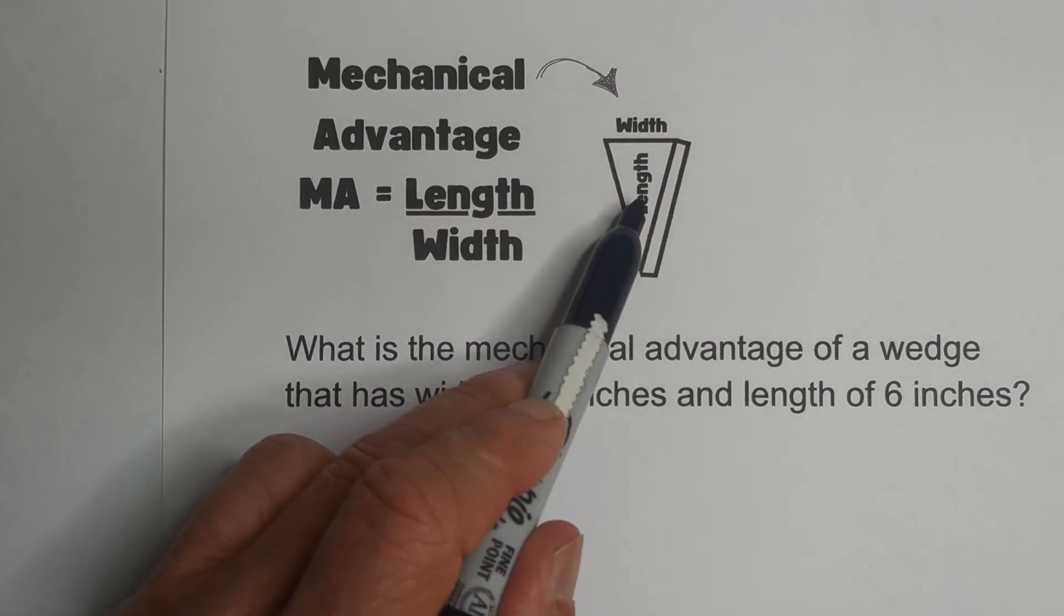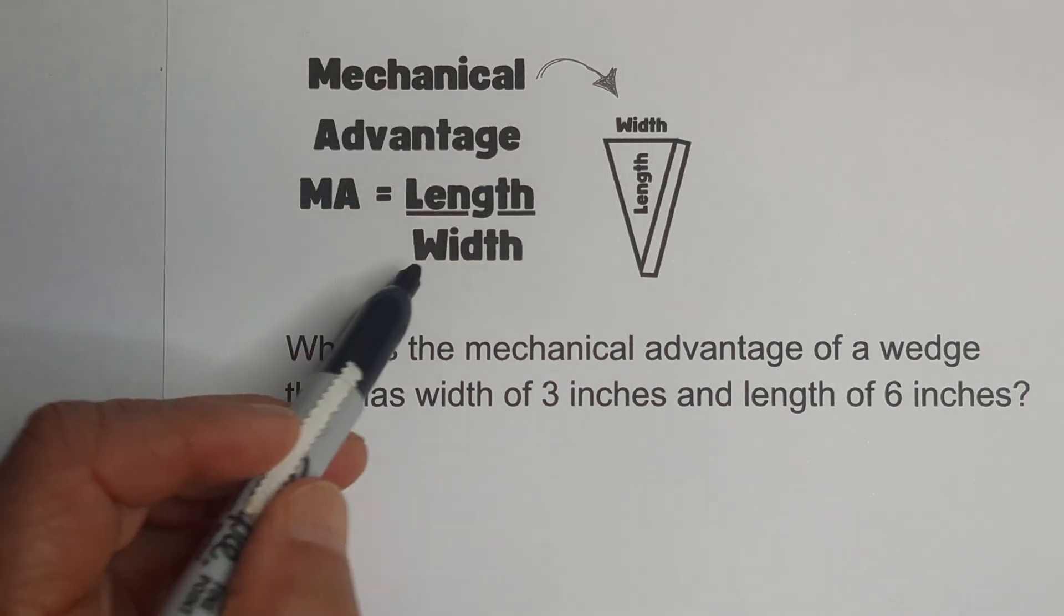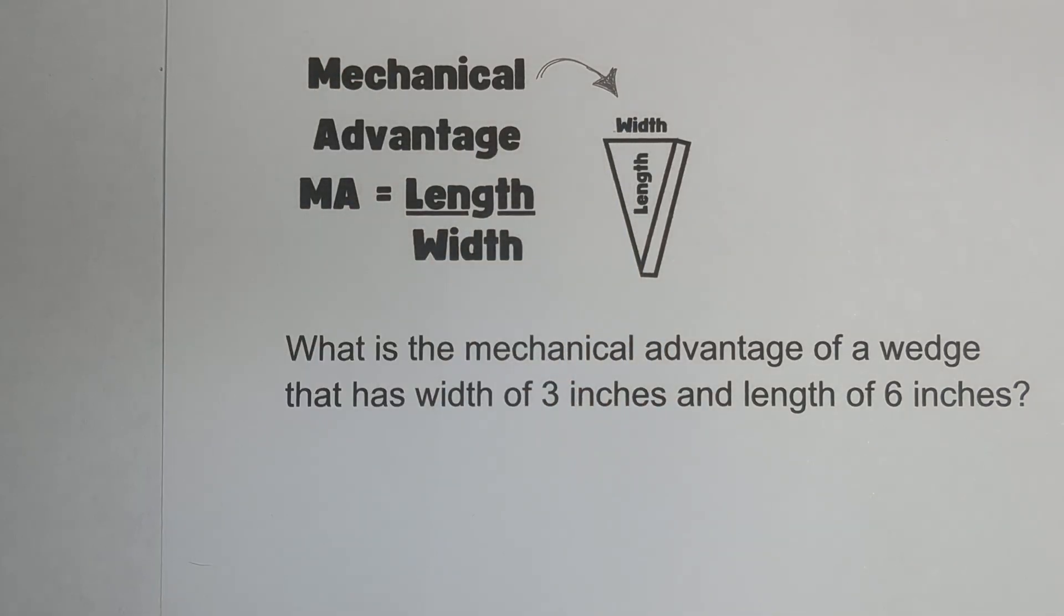So let's get started. For a wedge, the mechanical advantage is you just divide the length, which is shown here, by the width, which is shown here.